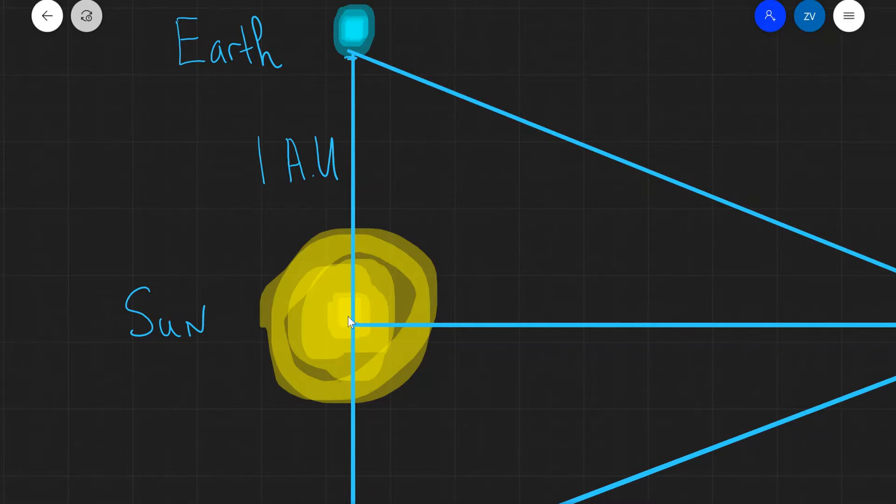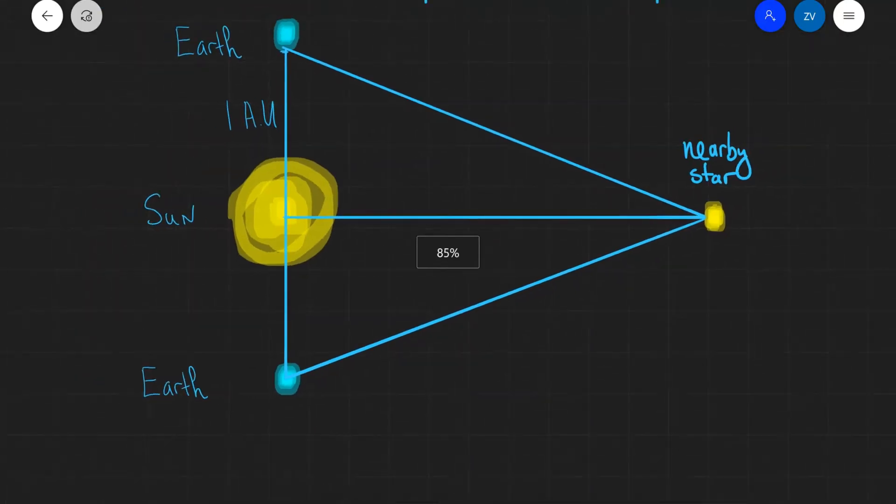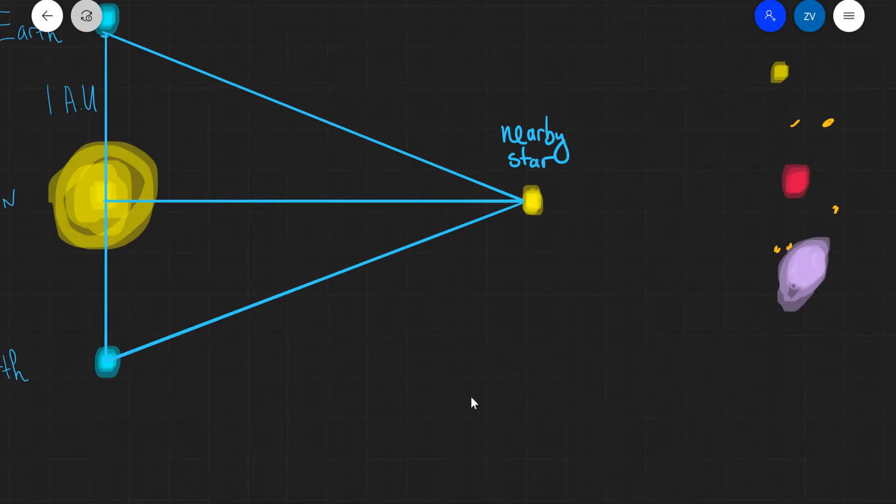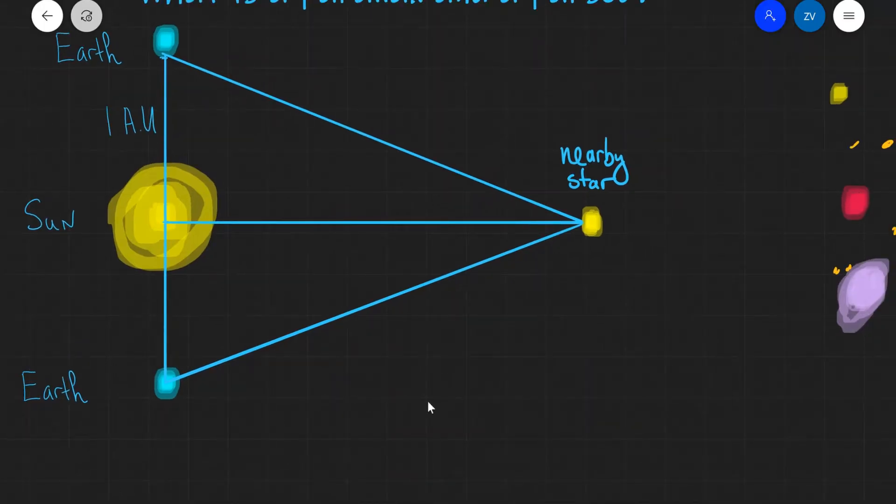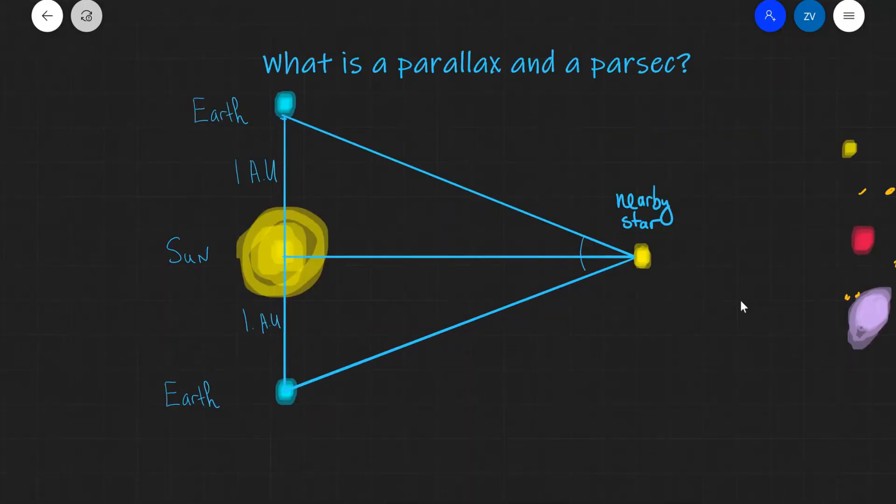The parallax is a technique that we use to determine the distances to nearby stars. What we're actually doing is we are observing a nearby star. By comparing the nearby star to the fixed background of much further away stars, we're going to notice that the star will be moving with respect to that fixed background. Because the Earth is moving around the Sun, in about six months time, the Earth will be on the opposite side of the orbit. And this distance here will once again be one astronomical unit.